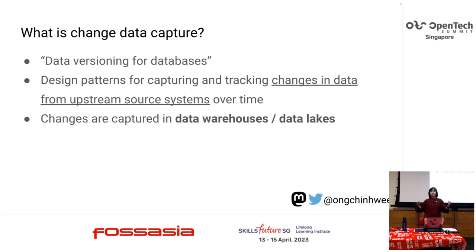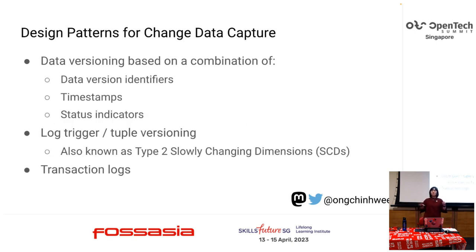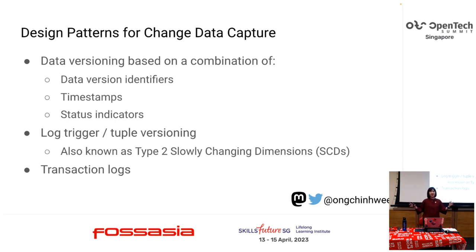Change data capture is simply data versioning from databases — design patterns for capturing and tracking changes in data from upstream source systems over time. These changes are captured in data warehouses or data lakes. Some design patterns include: data versioning using version identifiers, timestamps, and status indicators; log-based tuple versioning, also known as type 2 slowly changing dimensions; and transaction logs, which are system-specific.